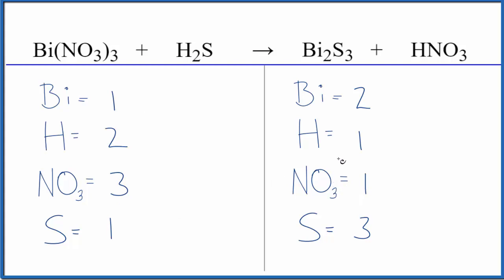Why don't we start by balancing the bismuth? We have two here and one here. We put a two here, one times two, that'll give us two of those. And then we have three nitrates times two, three times two, six there.